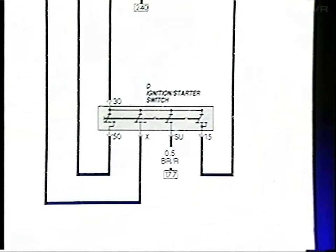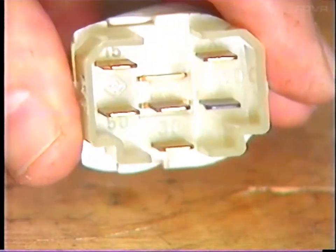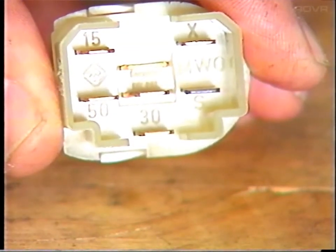The terminals on most other electrical components are also identified in this way. For example, terminal numbers 30, 50, X, SU, and 15 identify the terminals on the back of the ignition switch.